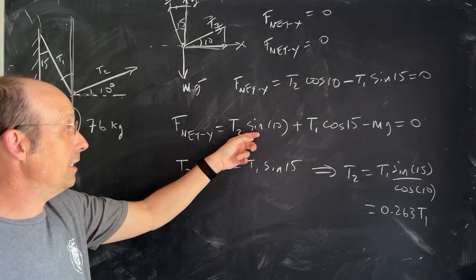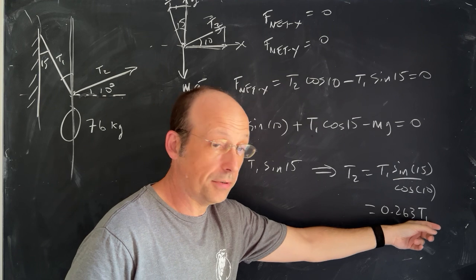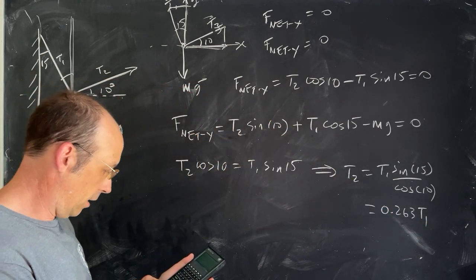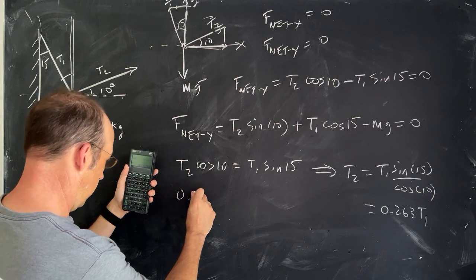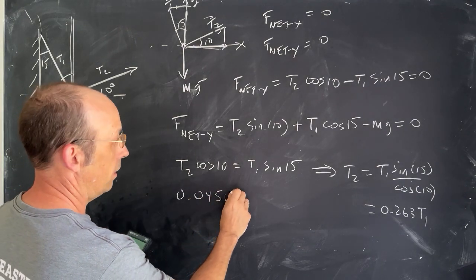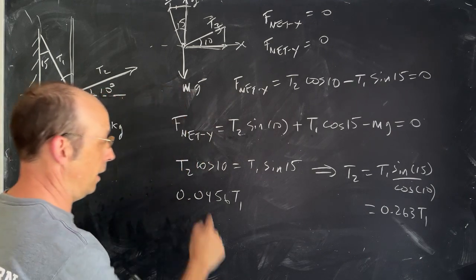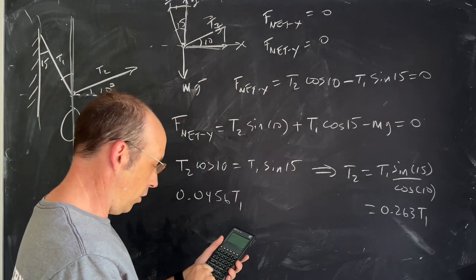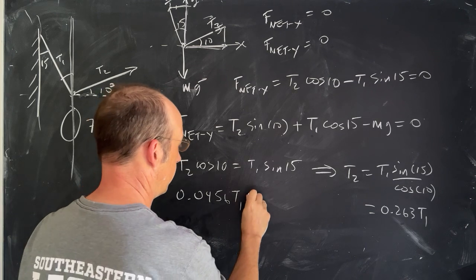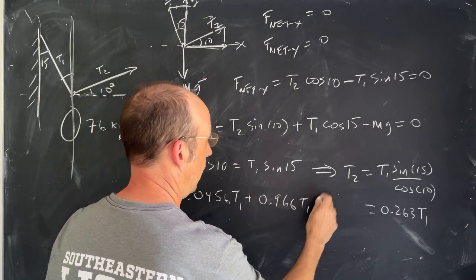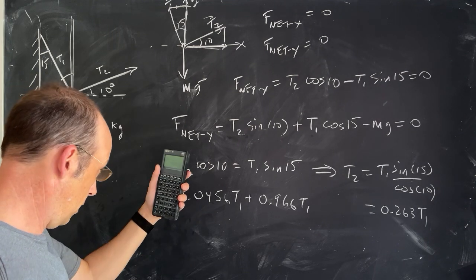I can take that and plug it into this equation. So instead of writing T2 sine 10, I'm going to take T2 times 0.263 times T1. So I'm going to write that all as a number by multiplying by sine of 10. So that gives me 0.0456 T1. And then over here, I have T1, I have cosine of 15, which is 0.966. And then I have minus mg. Let's put that in as a number, 75 times g gives 744.8.